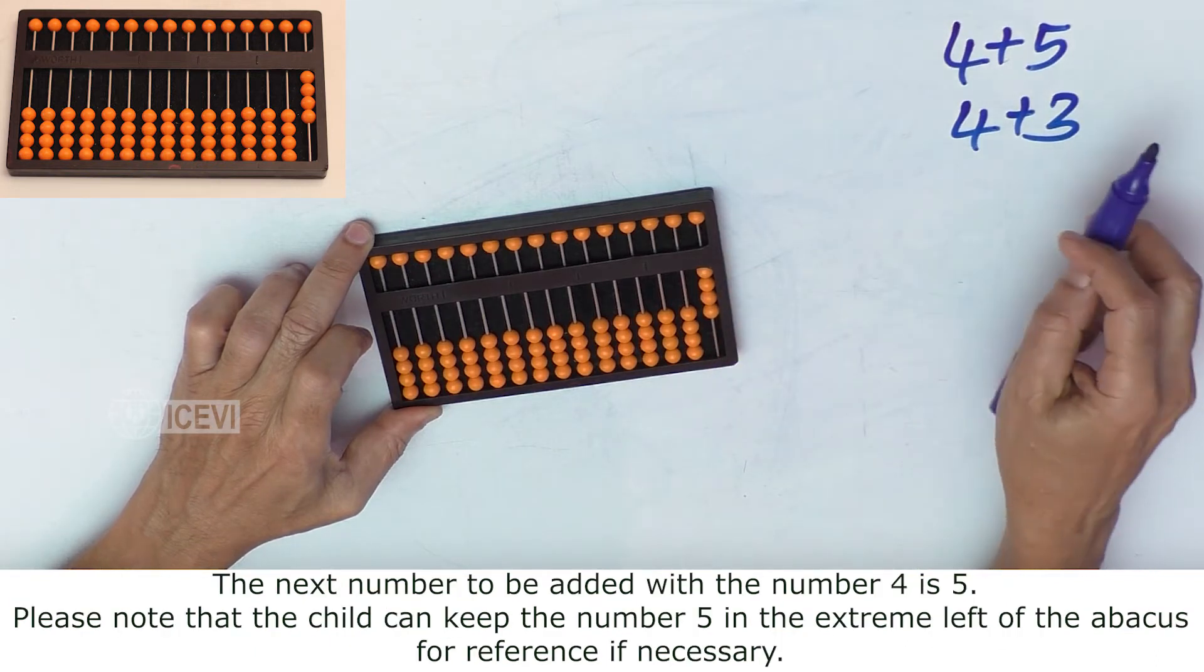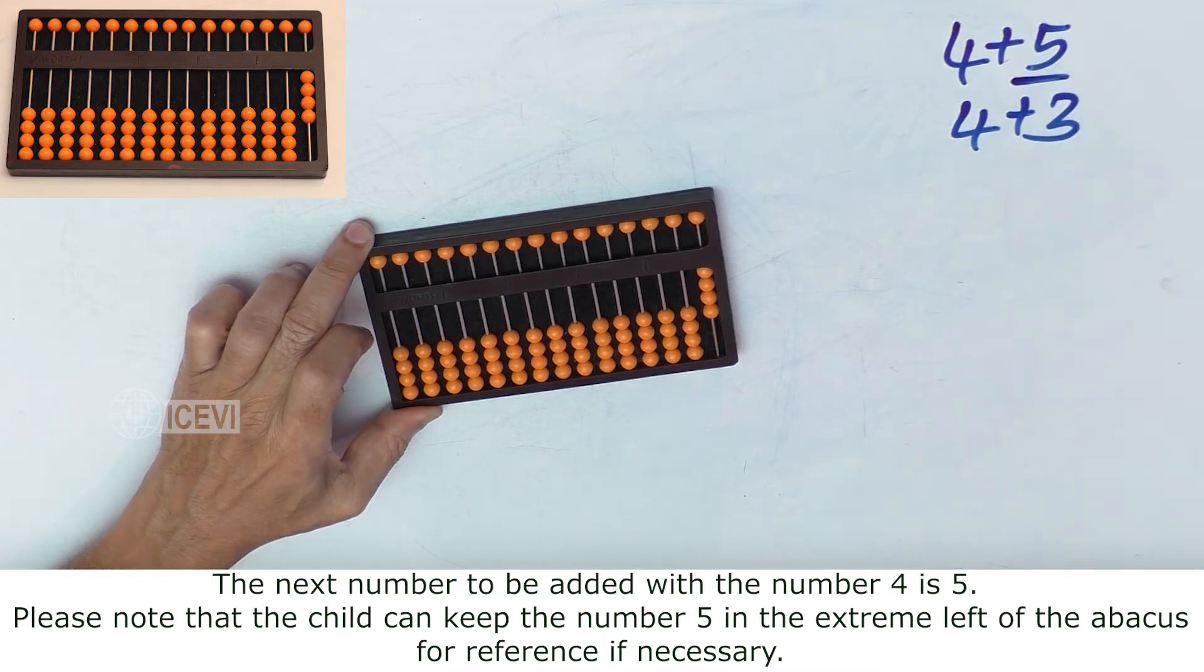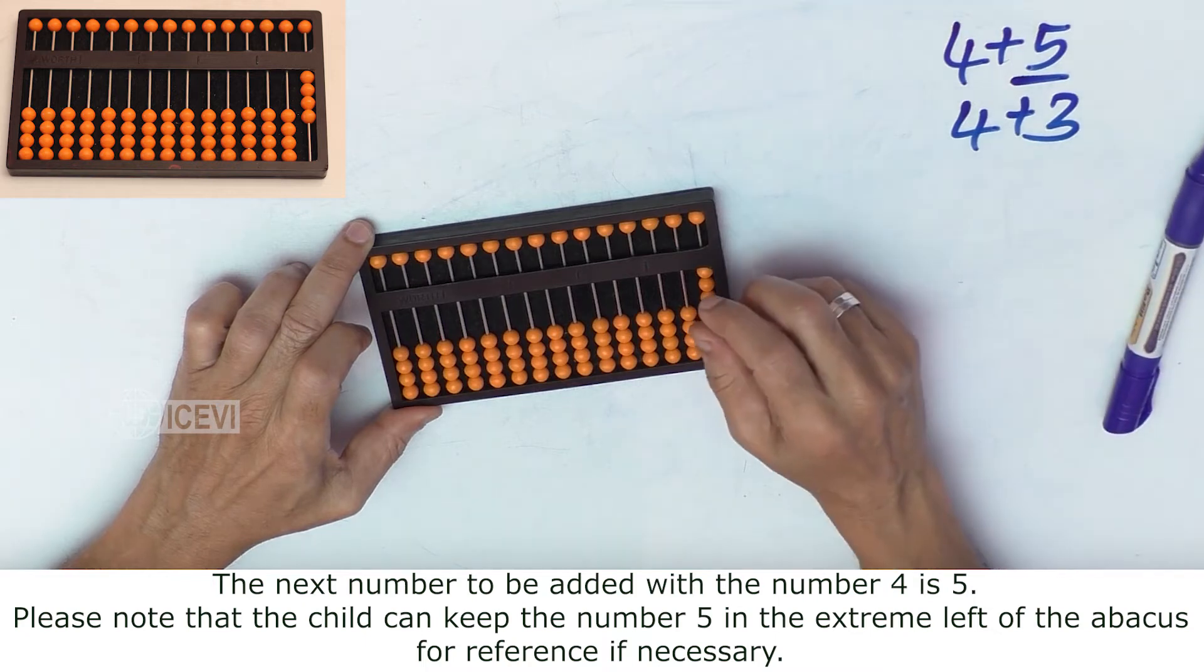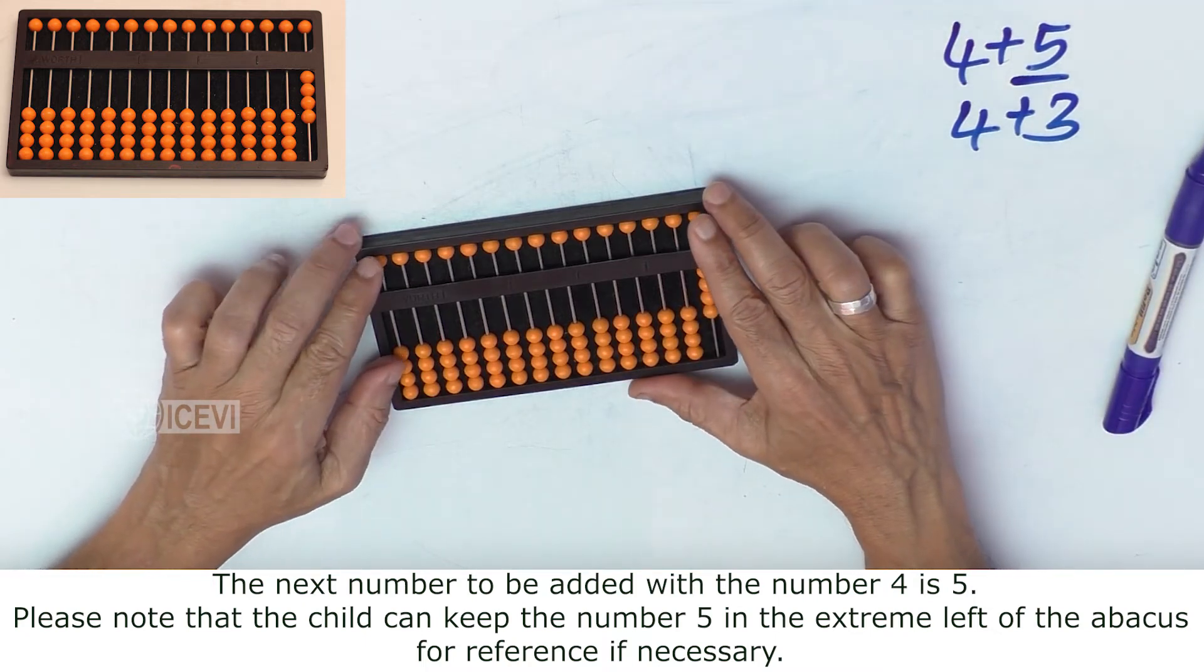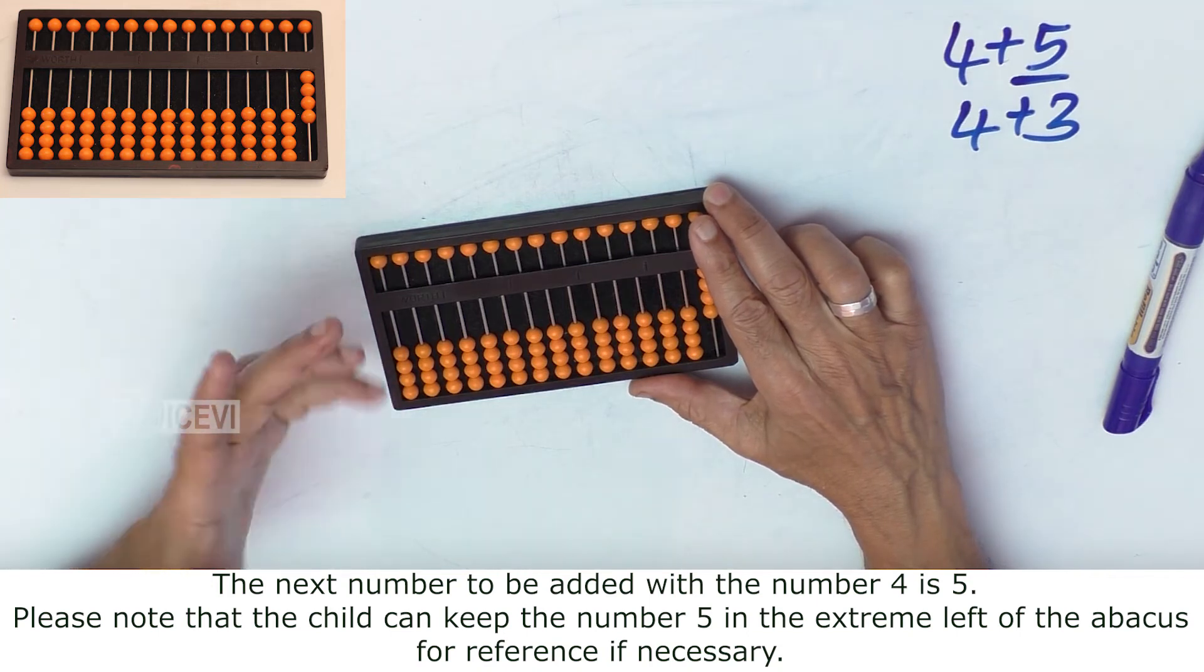The next number to be added with the 4 is 5. Please note that the child can keep the number 5 in the extreme left of the abacus for reference if necessary.